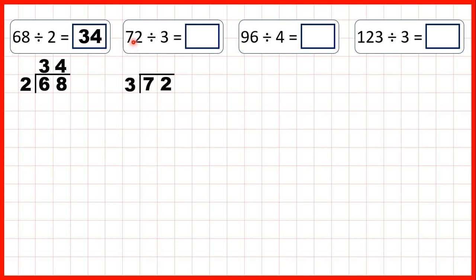Now we have 72 divided by 3, so we set the question out in the same way. But here, our first digit is a 7, and 7 isn't in the 3 times table. So what we need to do is think of a number in the 3 times table that's as close to 7 as possible, but not more than 7.